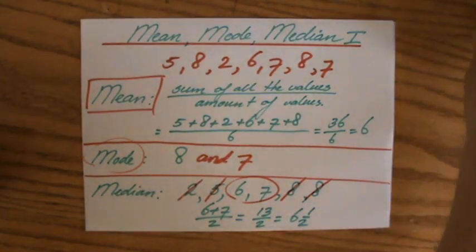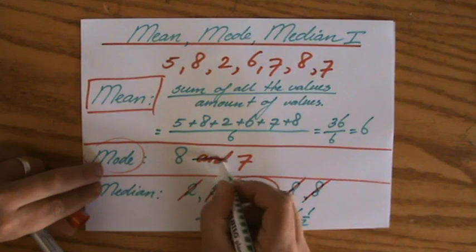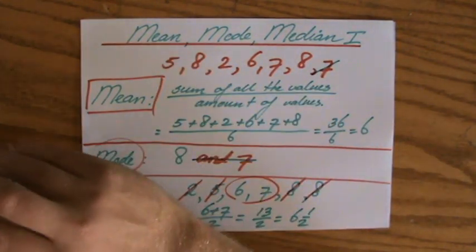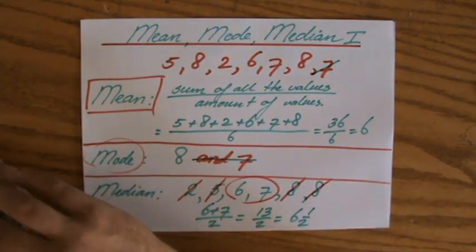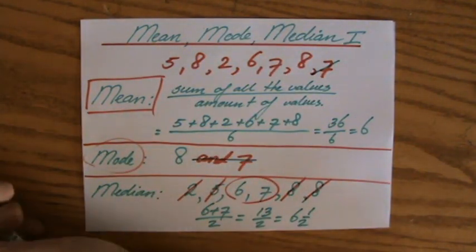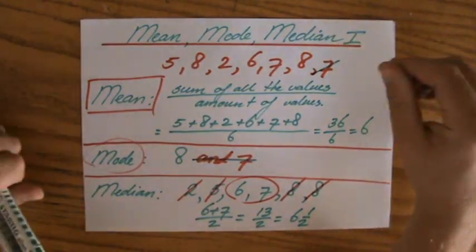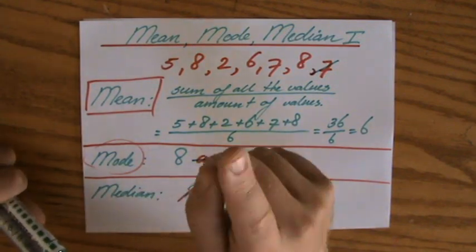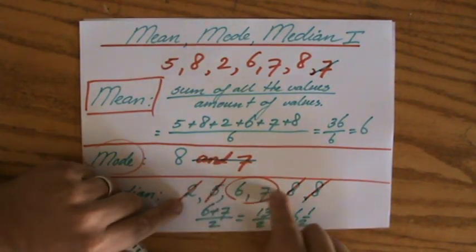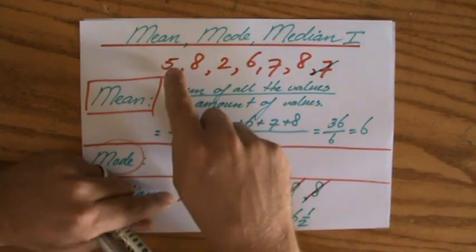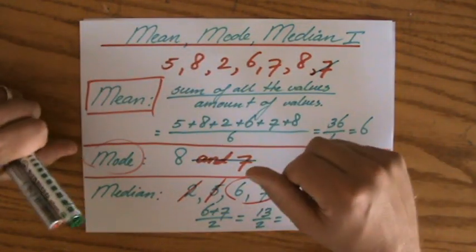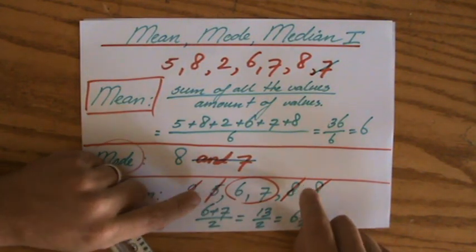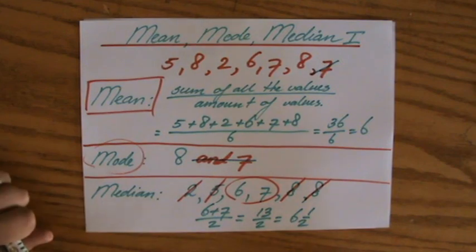To recap: the mean — your teachers are mean — is the sum of all values divided by the amount of values. The mode is the most popular piece of information; you can have no mode or more than one mode. The median, like a mediator, sits in the middle — but make sure to first order your information in ascending order before finding the middle value. That's a very commonly made mistake. Order it first, then find the middle value.